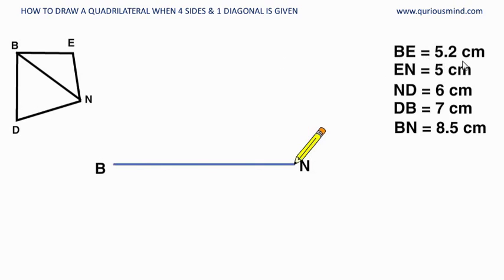First we will take 5.2 cm in our compass. We will put our sharp end of compass on point B here and draw an arc. Now we will take distance of 5 cm which is equal to EN in compass, keep the sharp end on point N and draw the arc. Where these two arcs intersect each other that is our point E.